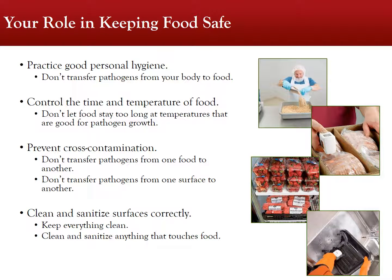As a recap, your primary responsibilities in keeping food safe are: practice good personal hygiene to ensure that pathogens aren't transferred from you to any food — this includes always properly washing one's hands, wearing clean clothing, and the proper use of gloves. Control the time and temperature of food — don't let food stay too long at temperatures between 41 and 139 degrees Fahrenheit, the temperature danger zone where pathogens grow best. Prevent cross-contamination by not transferring pathogens from one food or surface to another, and be aware of any children that have allergies. Clean and sanitize surfaces correctly by always washing down any surfaces that may come into contact with food.